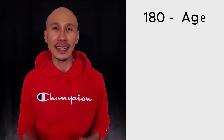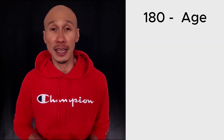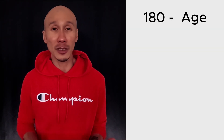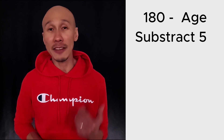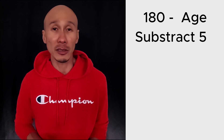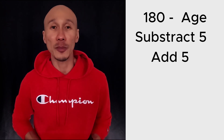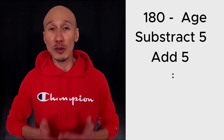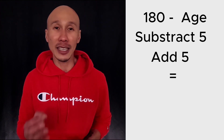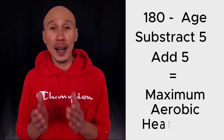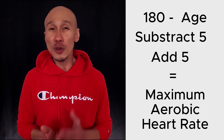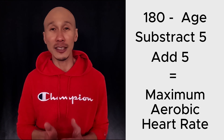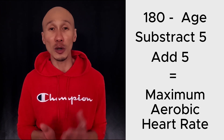Subtract your age from 180, then adjust based on your health and fitness level. For example, subtract 5 beats from that number if recovering from an illness or injury, or add 5 beats if you have been training consistently for over 2 years without setback, and you arrive at a heart rate number that would be your maximum aerobic heart rate. Your zone 2 heart rate ceiling should be just below this number.